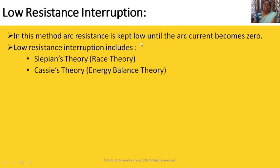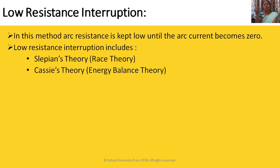In the low resistance interruption method, arc resistance is kept low until the arc current becomes zero. This method is applicable for AC circuits because AC has an alternating waveform — it passes through zero. When current becomes zero, the arc is quenched for a brief moment. It passes zero twice in a cycle. This is called the low resistance interruption method and is applicable only for AC circuit breakers.